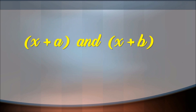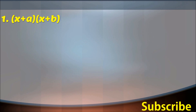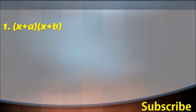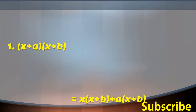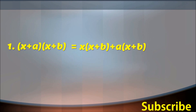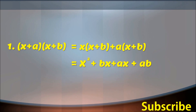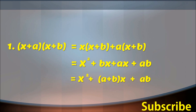x plus a and x plus b are two binomials with one term common. Let us multiply these binomials: x plus a into x plus b is equal to x into x plus b, plus a into x plus b, which equals x square plus bx plus ax plus ab, and is equal to x square plus a plus b into x plus ab.